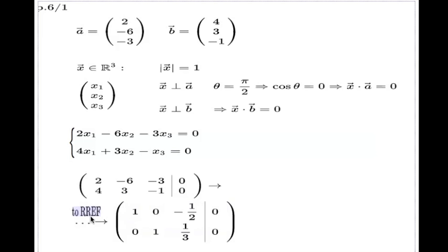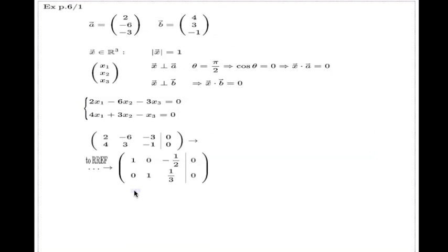Now in the reduced row echelon form, when you start doing the back substitution, the solution is immediate. So this is my x₁ column, this is my x₂ column. This is a non-leading column and that's the column which we will parametrize, and that's the name of the parameter I will use. Here's the solution—it's straightforward: x₁ is positive λ over 2, x₂ is negative λ over 3, and x₃ is just λ. Of course, I can put this in the vector form, and that's the solution in the vector form.